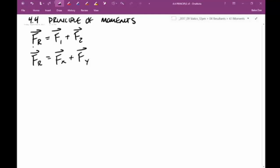And then I take the cross product of both sides of this equation. So I take an r vector cross FR, knowing that we're going to use this distributive property.